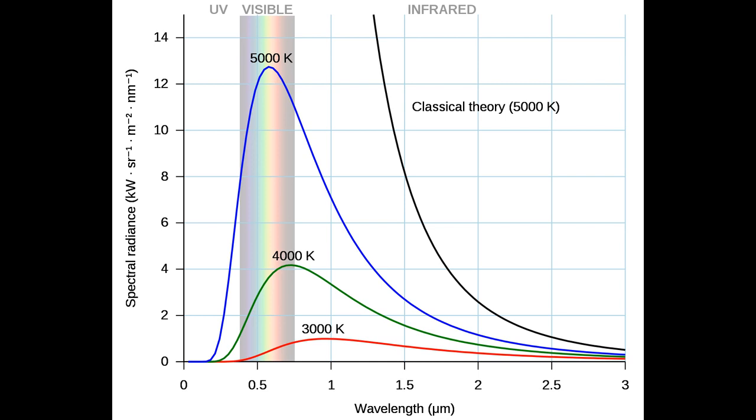Real materials emit energy at a fraction called the emissivity of black body energy levels. By definition, a black body in thermal equilibrium has an emissivity of ε = 1.